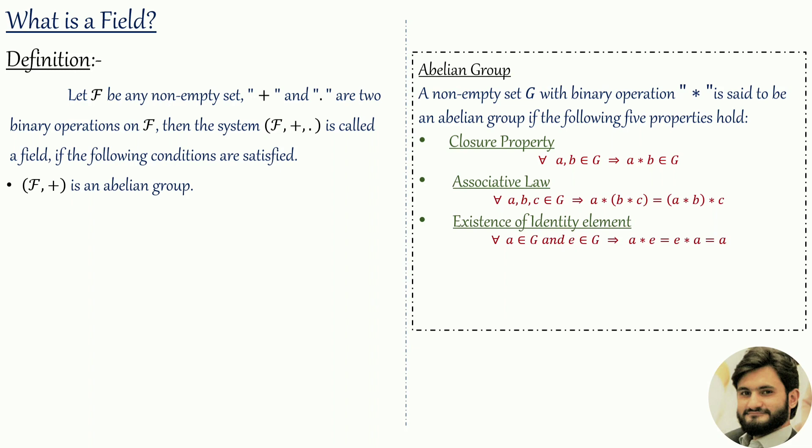For the identity element: a * e = e * a = a. The fourth property is the existence of an inverse: for all a, a-inverse belongs to g, and a * a-inverse = a-inverse * a = identity element.